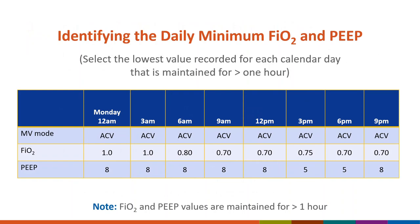Let's look at an example. Documentation in the medical record may look something like this. The mode of ventilation is an eligible mode and the FIO2 and PEEP settings have been documented eight times over the course of the calendar day. When documentation of settings takes place at intervals of greater than one hour, as in this case, it is easy to determine which values have been maintained for more than an hour. In this example, the daily minimum values are an FIO2 of 0.70 or 70% and a PEEP of 5 centimeters of water.